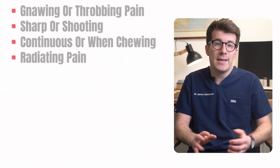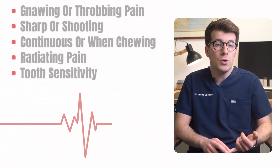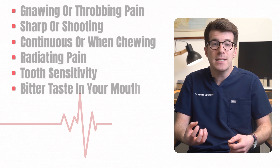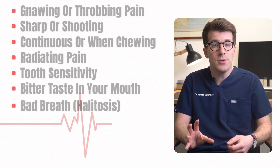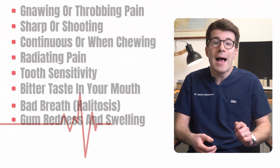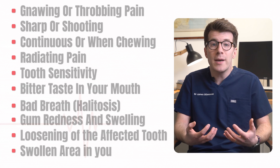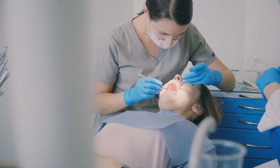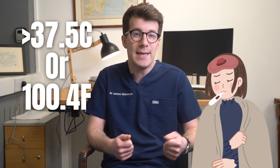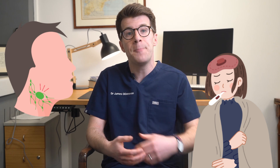Other tooth abscess symptoms might include tooth sensitivity to hot or cold food or drinks and temperatures, a bitter taste in your mouth, bad breath — medically known as halitosis — as well as gum redness and swelling, loosening of the affected tooth, and a swollen area in your upper or lower jaw. In some cases, an open, draining sore on the side of your gums can form. You might also experience more generalized symptoms such as a high fever — a temperature greater than 37.5 degrees C or 100.4 Fahrenheit — swollen lymph nodes around the jaw area, as well as general discomfort, uneasiness, or just feeling very unwell.